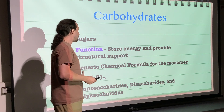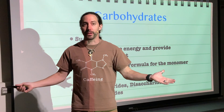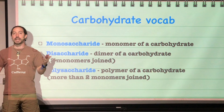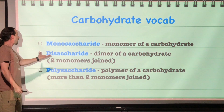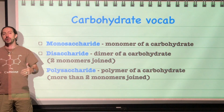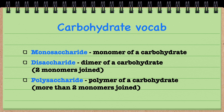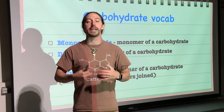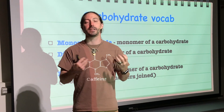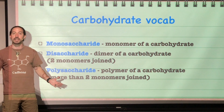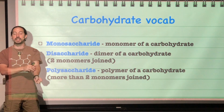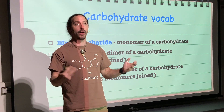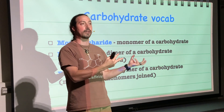Now for some vocabulary: monosaccharides, disaccharides, and polysaccharides. The prefixes tell you what they mean — mono means one, so a monosaccharide is a single unit of a carbohydrate. Di means two, so a disaccharide is two monosaccharides bonded together. Poly means many, so a polysaccharide is many units joined together. All of these are joined using dehydration synthesis — the same reaction used for lipids — and to break them apart, hydrolysis is used.